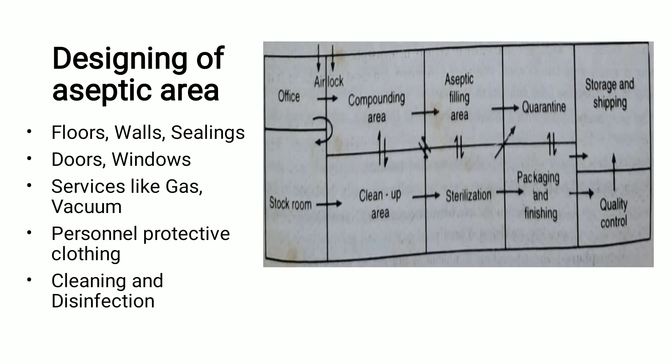Special care must also be taken with services such as gas and vacuum. Any gas pipes or vacuum pipes installed in the aseptic area should be placed mostly underground, or if they run along the wall, they must be fitted properly to ensure no contamination enters through these service lines.